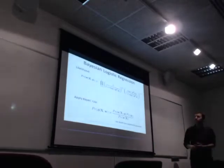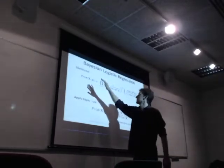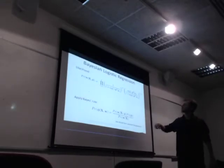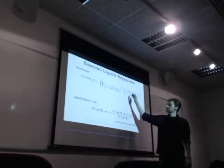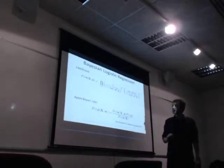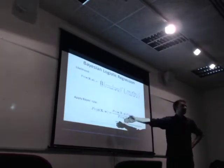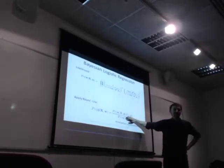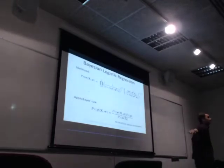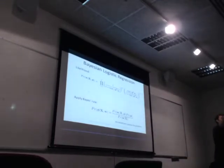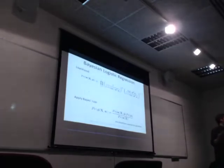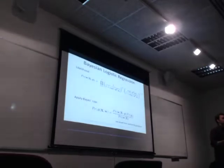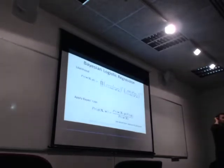For Bayesian logistic regression, we've got this likelihood based on the Bernoulli distribution. We know we're going to have to use Bayes' rule — what's missing is a prior. What's a good prior for phi? Beta distribution — a beta distribution would be conjugate, which is a good reason to suggest that.